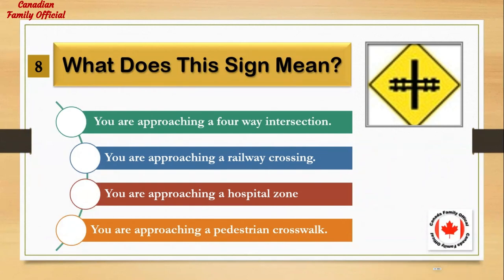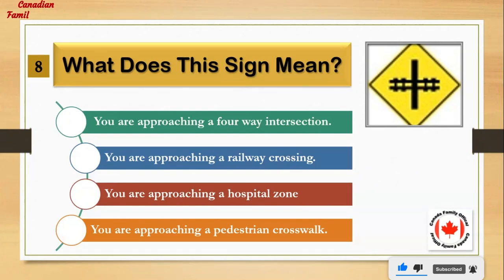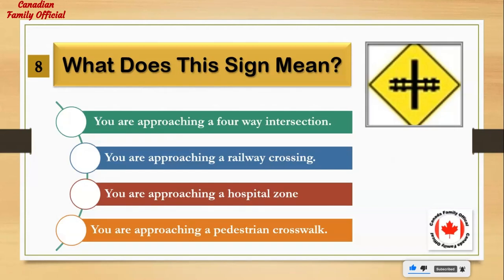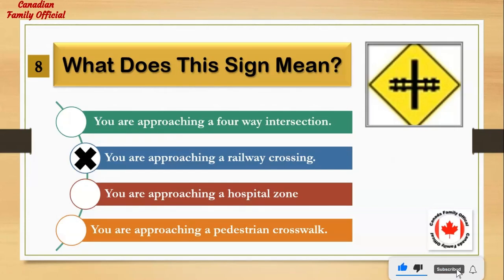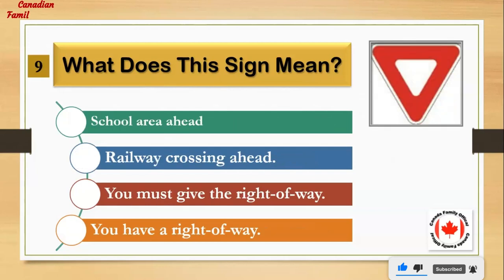What does this sign mean? Number 1: you are approaching a 4-way intersection. Number 2: you are approaching a railway crossing. Number 3: you are approaching a hospital zone. Number 4: you are approaching a pedestrian crosswalk. And the answer is: you are approaching a railway crossing.